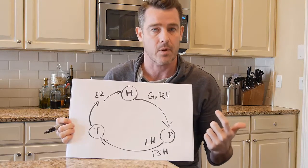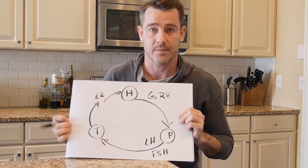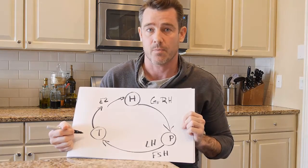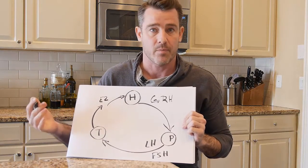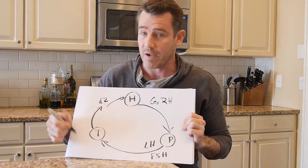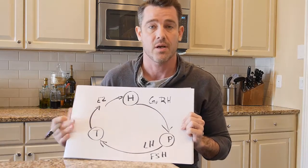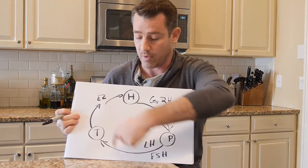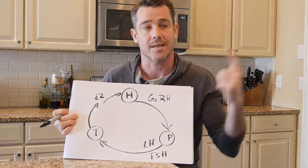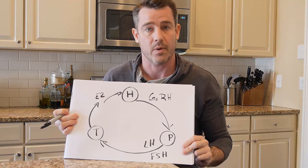Low T, or hypogonadism, comes in two forms. Primary hypogonadism means the testicular function to produce testosterone is not optimal — it may not even be present at all depending on how severe it is. Primary hypogonadism exists at the testicular level. Secondary hypogonadism exists everywhere else, meaning something in that cascading or signaling chain of hormones is not working the right way.